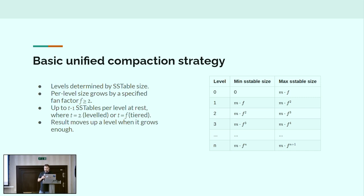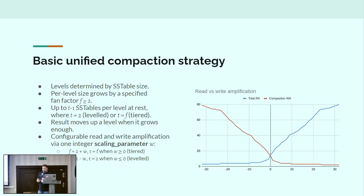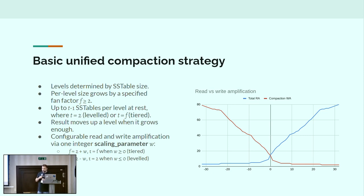Because these two modes are on a spectrum, you can tune a single scaling parameter: when it's negative, you're doing leveled compaction, and as you go more negative, you're doing more optimization towards reads at the expense of more writes. When you go positive, you're doing a little more reads per query but less work per write. This gives you a space of many possible options for tuning your compaction strategy to work better for your specific workload.